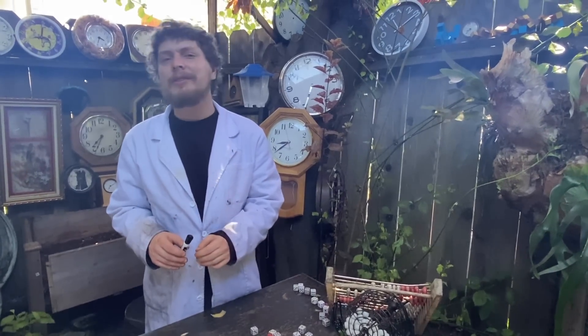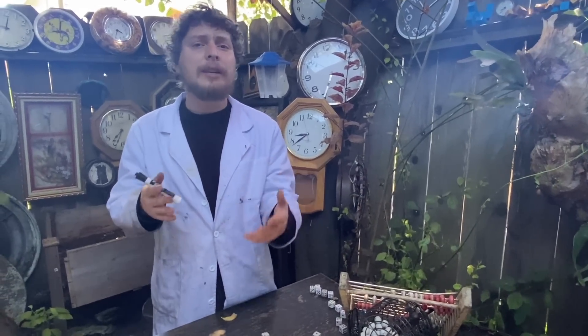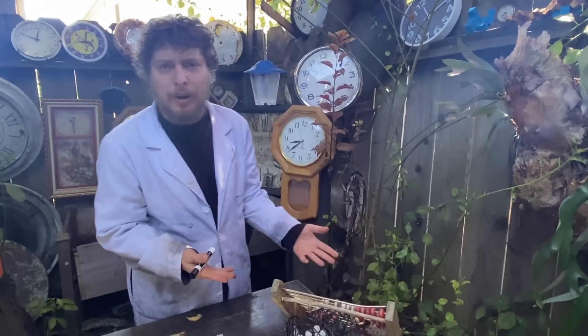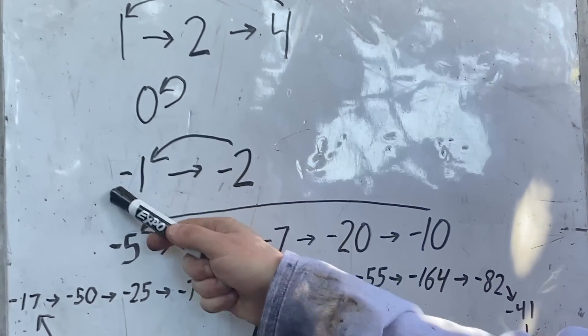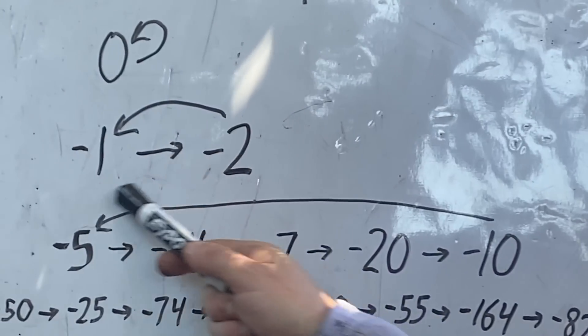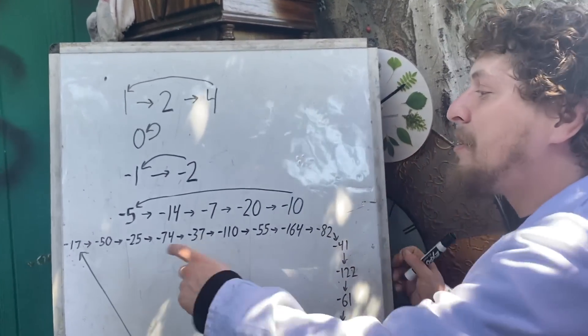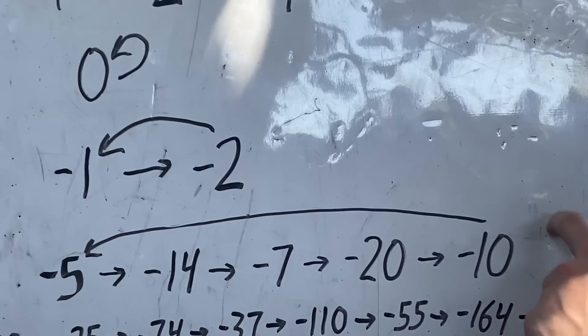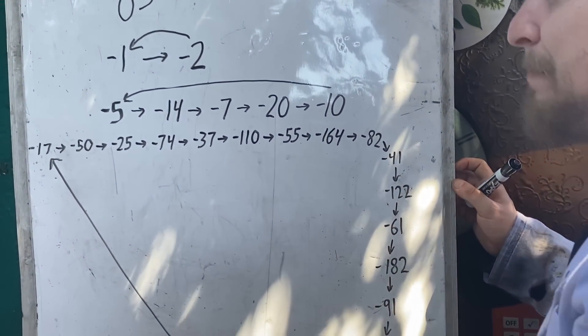Progress has been made on this question over the years, although it still hasn't been fully cracked. Mathematicians have also looked at extensions, like what if we allowed negative numbers? Negative 1 is odd, so we go to 3 times it plus 1, which sends us to negative 2, which is even and gets cut in half back to negative 1. So negative 1 and negative 2 have their own loop. There are two other negative number loops: one where negative 5 goes all the way to negative 10 and back, and a longer one where negative 17 goes through a bunch of steps before returning.